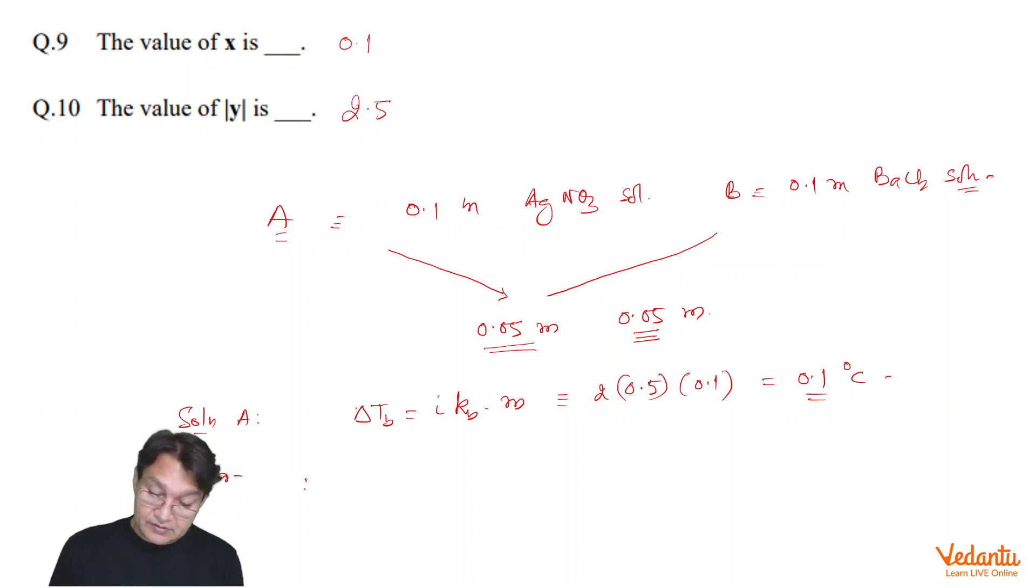we have 0.05 mol of Ag plus ion, 0.05 mol of NO3 negative ion,